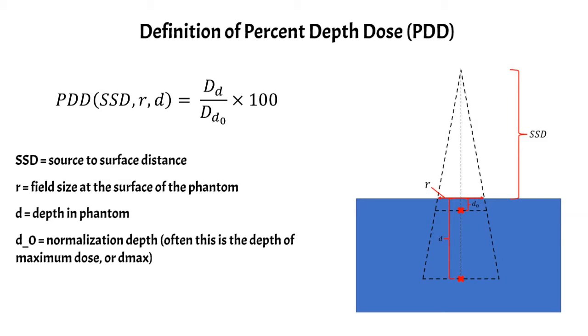D naught is a normalization depth which basically sets where your PDD is equal to 100, and in most cases at most institutions d naught is taken to be the depth of maximum dose or d max.